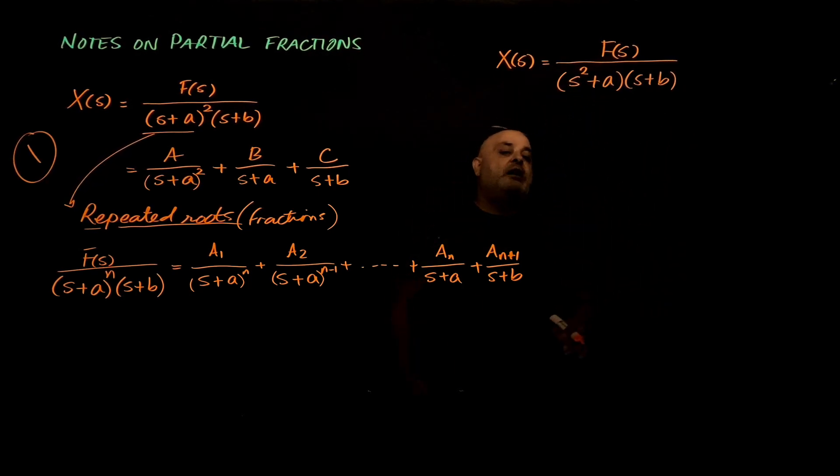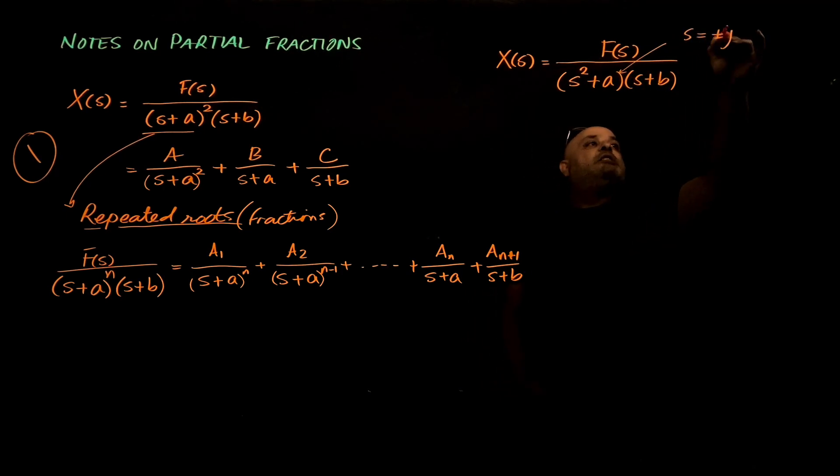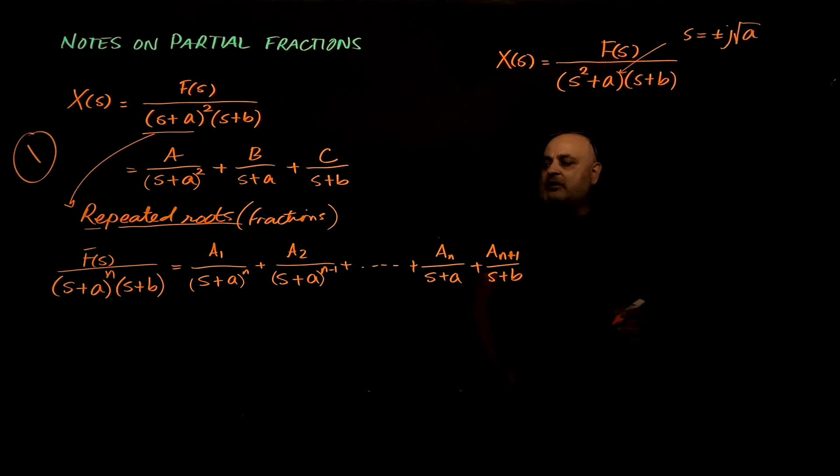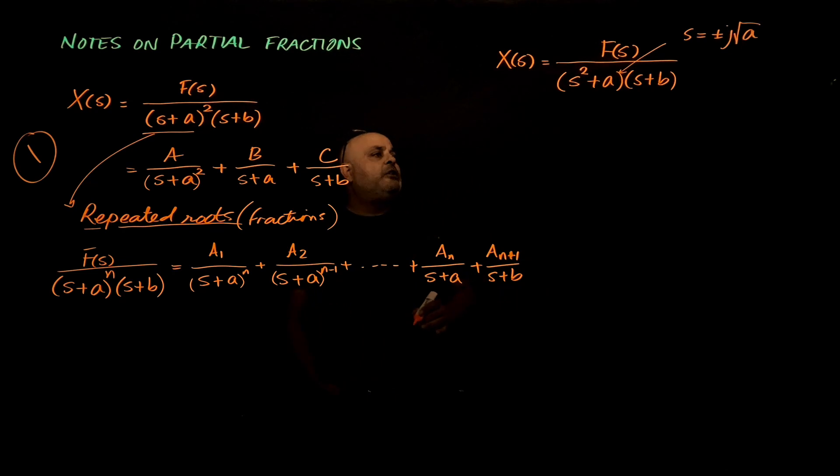I cannot break this any further in the real domain. If I break it any further, that would be complex numbers. It's going to be plus minus negative, plus minus square root of a times the complex index. So, this is going to be s equals plus minus j times square root of a. And I will end up with complex fractions, and that's not something that you want to deal with. It's doable, but it's going to be a bit complicated.